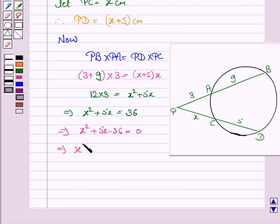We will have x squared plus 9x minus 4x minus 36 is equal to 0.